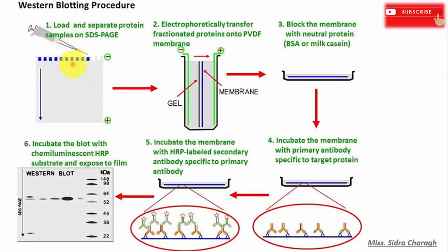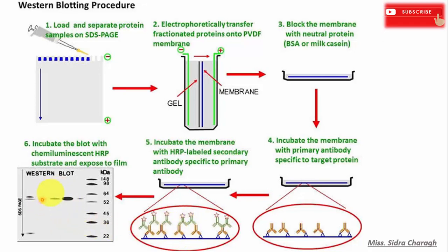Here is the Western blotting procedure. First, we isolate our protein sample. Then after isolation, we load and separate the protein sample on SDS-PAGE. The next step is electrophoretic transfer of fractionated protein onto a PVDF membrane, then blocking the membrane with a neutral protein such as bovine serum albumin or milk casein. Then we incubate the membrane with a primary antibody specific to the target protein, followed by incubation with a horseradish peroxidase-labeled secondary antibody that is specific to the primary antibody.